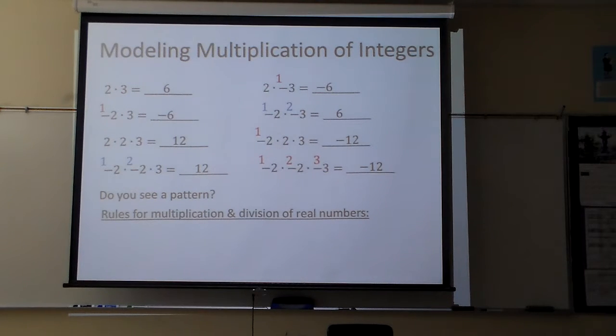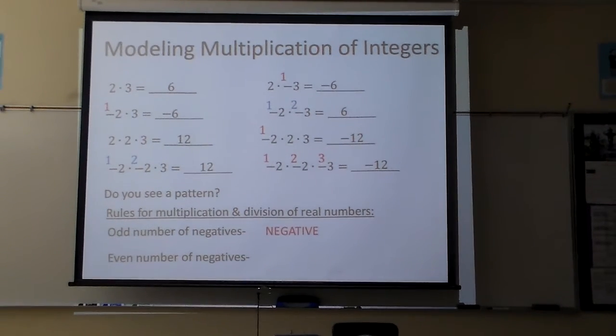So here's our rules. If there's an odd number of negatives, notice the ones that are here in red had odd number of negatives. Those were negatives. And if you have an even number of negatives, they cancel each other out. For those of you who've been in class, you've heard the did not go to the store story. So there we go. It turned out to be positive.